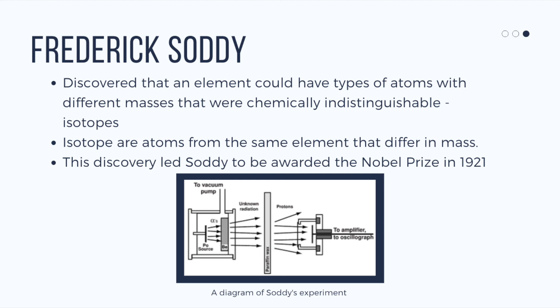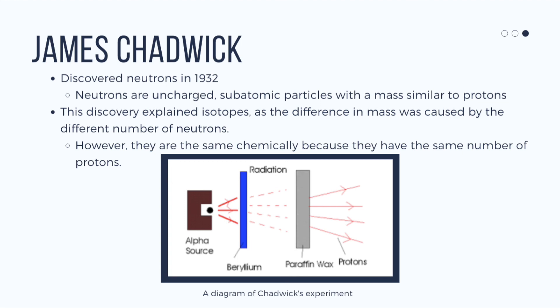James Chadwick discovered neutrons. Neutrons are uncharged subatomic particles with a mass similar to protons. Chadwick's discovery helped explain isotopes, as the difference in mass was caused by a different number of neutrons. They are chemically similar because they have the same number of protons.